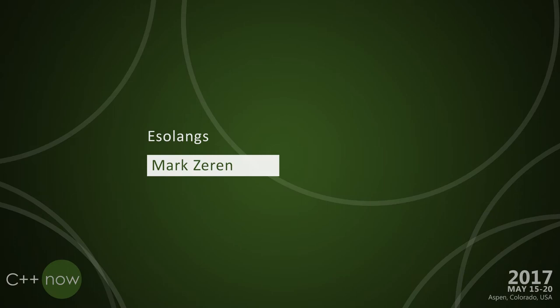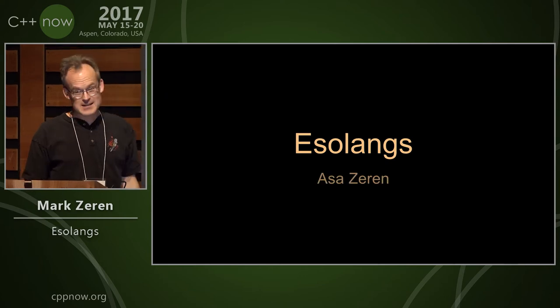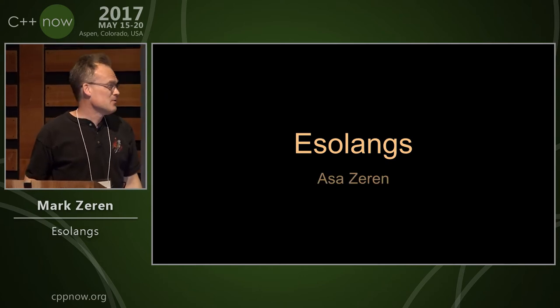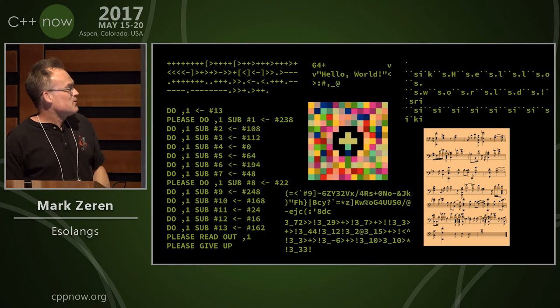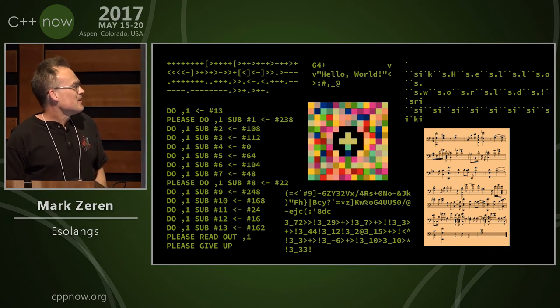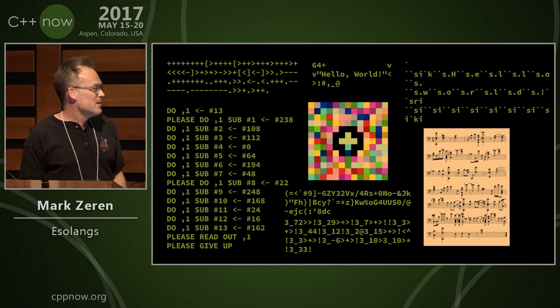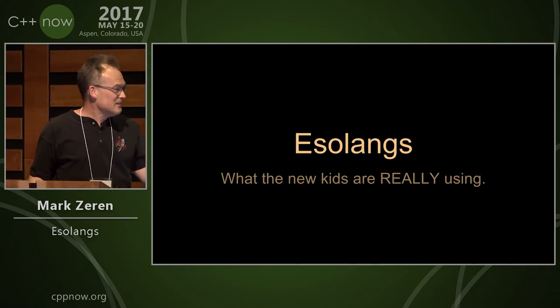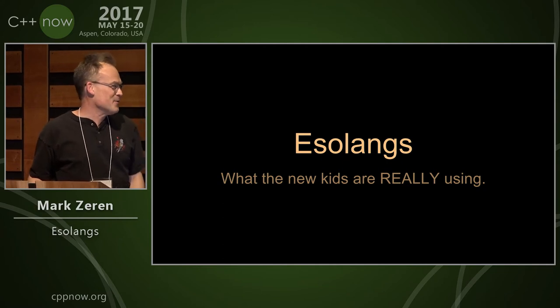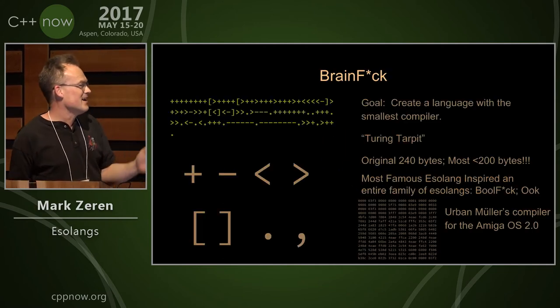Hi, my name is Mark, and I'm going to give you a talk about esolangs, except this talk was by Asa Zarin, who is my son, who is an eighth grader. And esolangs are these funny things that look like this. They are esoteric programming languages, sometimes called Turing tar pits, and these are what the real young kids are designing today.